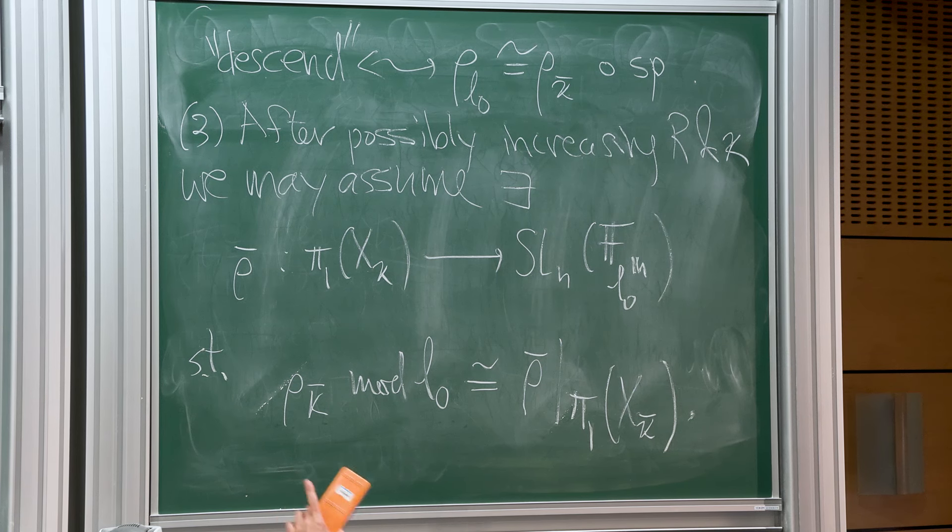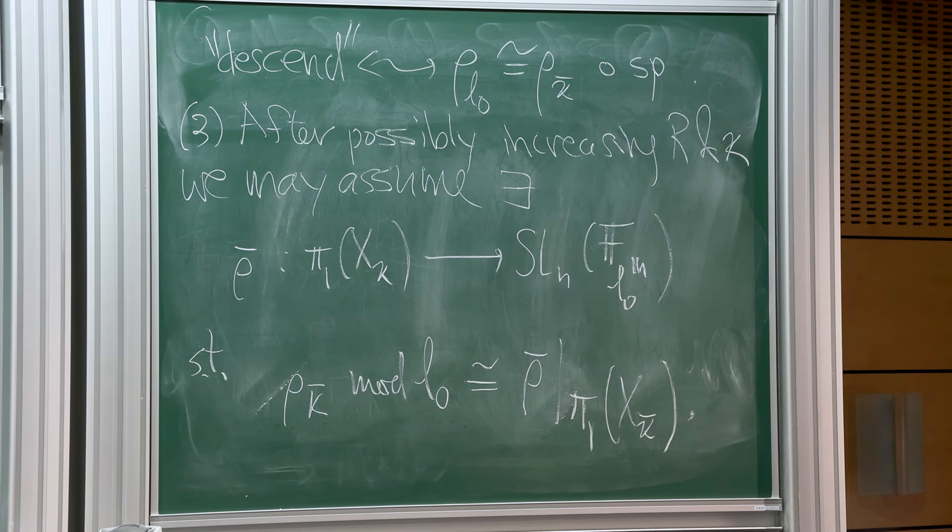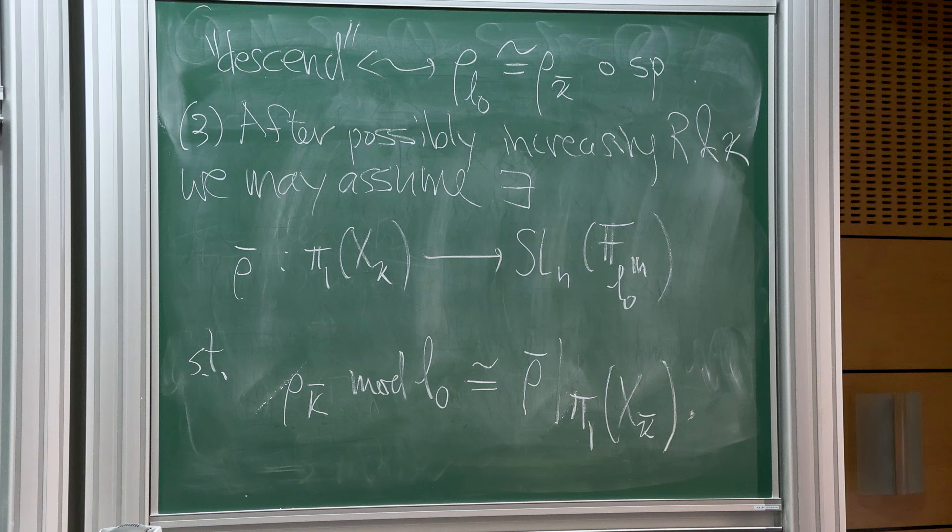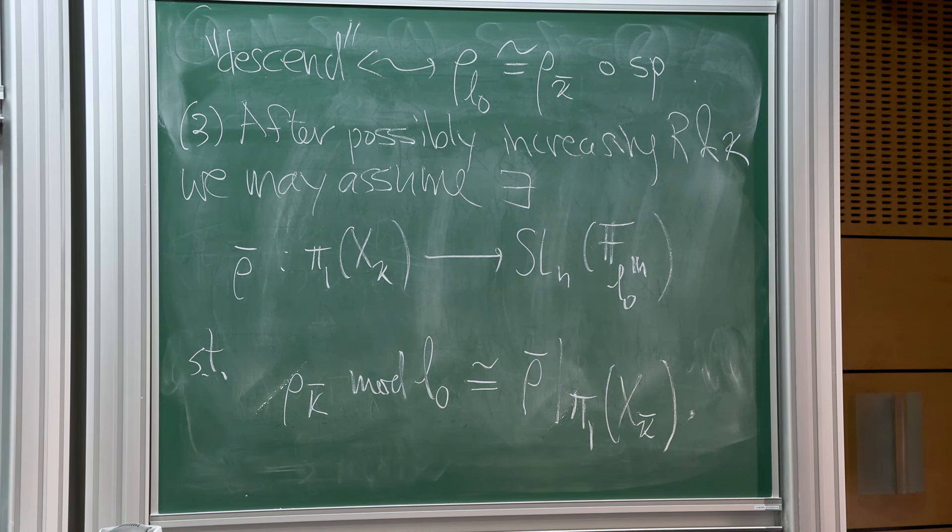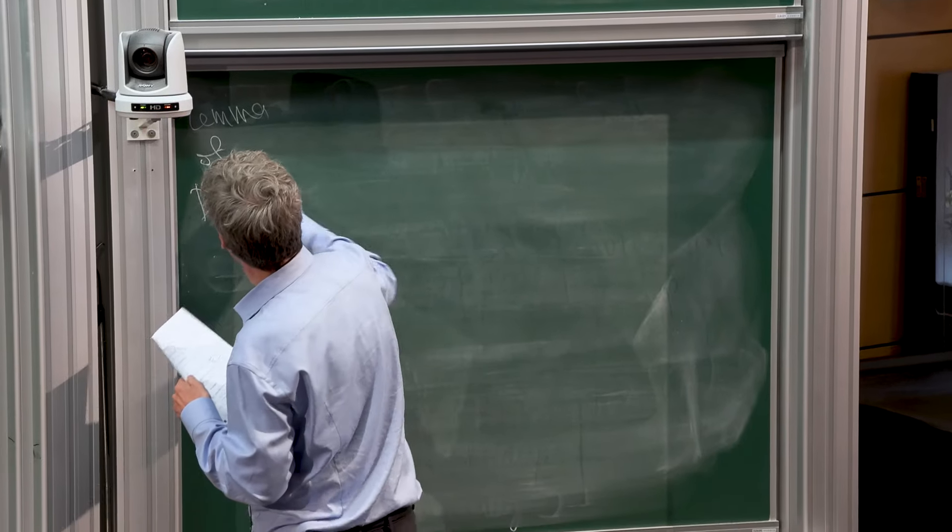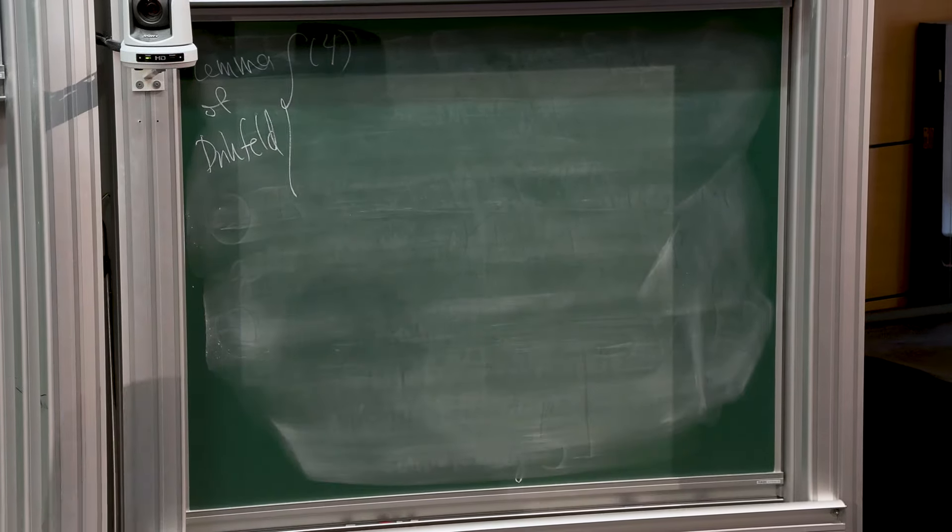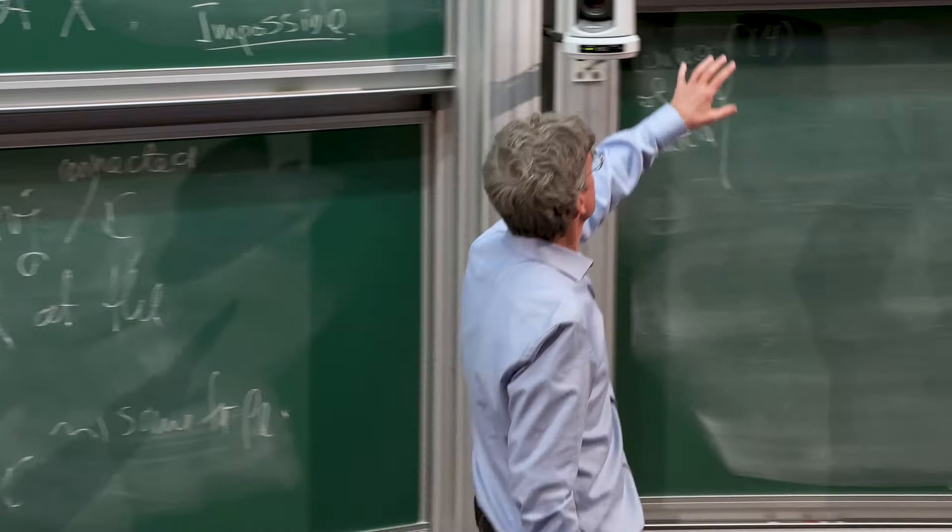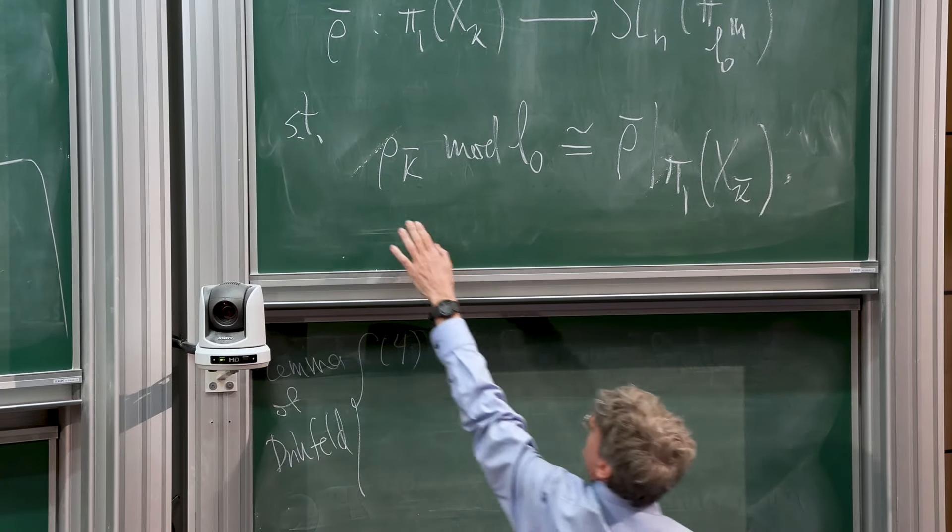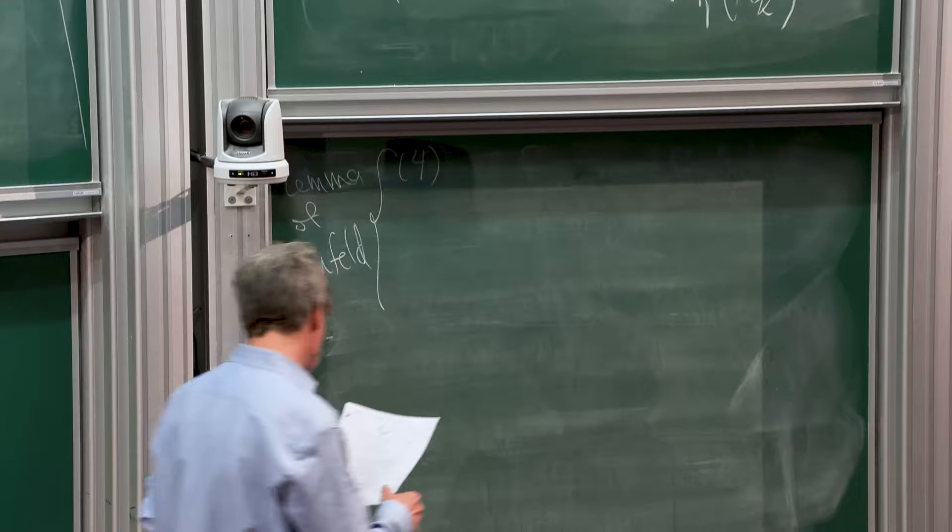After possibly increasing R and kappa, we may assume there exists - these are all geometric representations, and now I want to get an arithmetic representation - a rho bar from pi 1 of X kappa to SLN of a finite field FL0 to the N, such that when you take rho kappa bar, this is the same as rho bar restricted to the geometric thing.